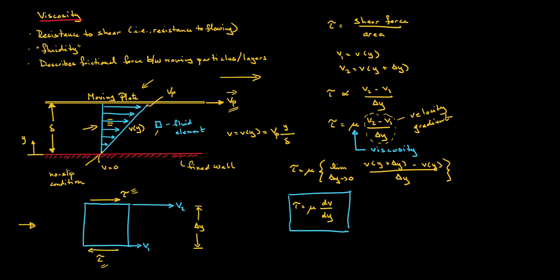So the shear stress at a given layer of fluid equals the viscosity multiplied by the velocity gradient at that point. This is a simplistic example — for different flows the velocity gradient is not necessarily linear; it could be parabolic or even something quite irregular. That is why the shear stress is usually defined at a given point.